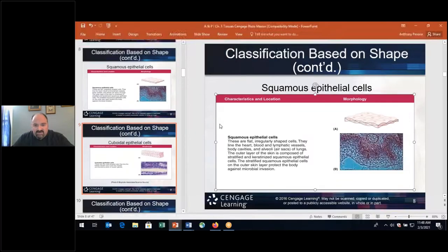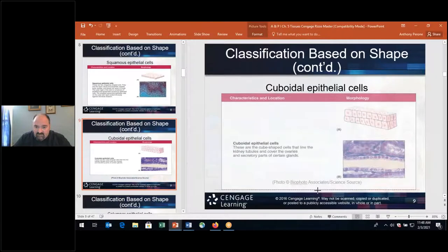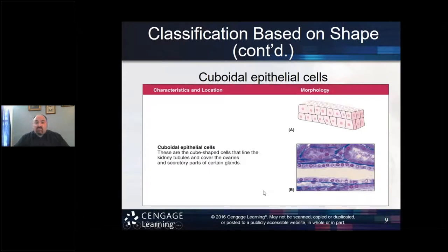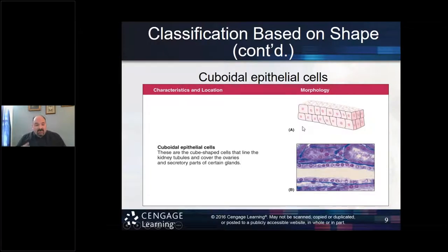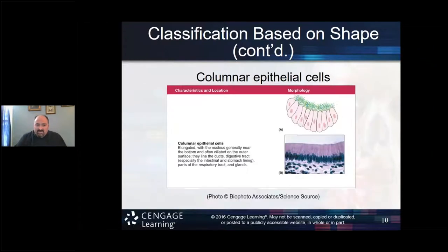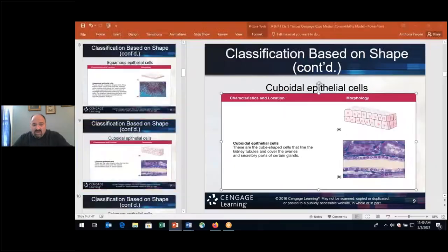Cuboidal epithelial cells are cube-shaped and are found in glands — which produce secretions — and in areas like the reproductive system and urinary system.